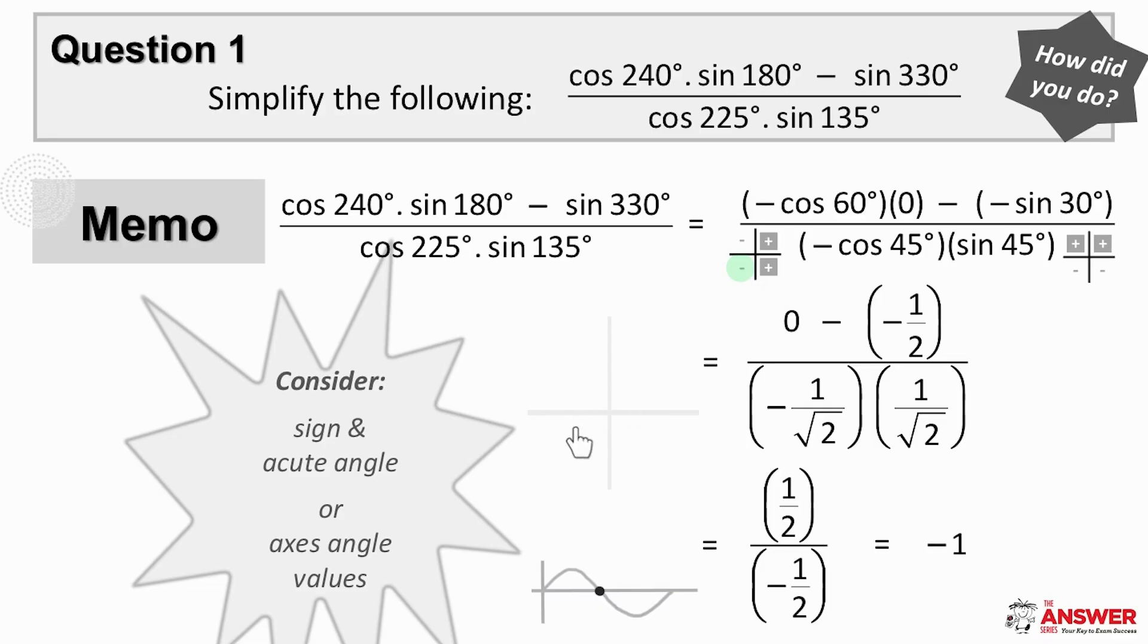Sine of 330. This is a fourth quad angle so when reduced sine will be negative and the reference angle will be 30 degrees and so this reduces to negative sine 30. Make sure to use brackets as you go so that all signs and terms are clear and accurate.